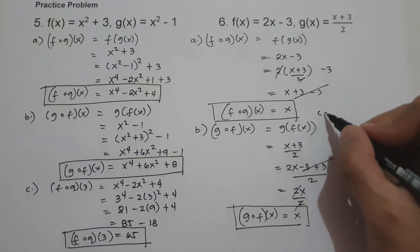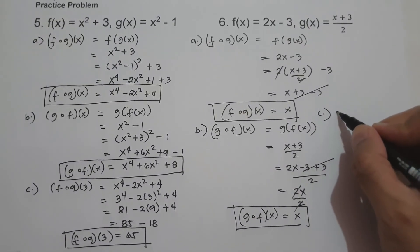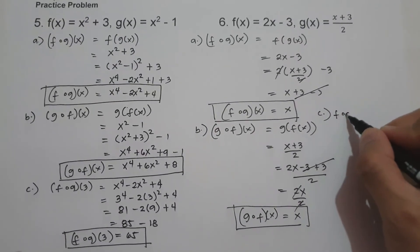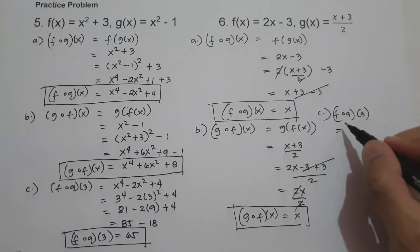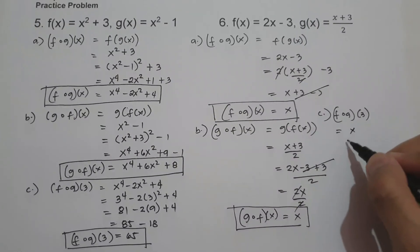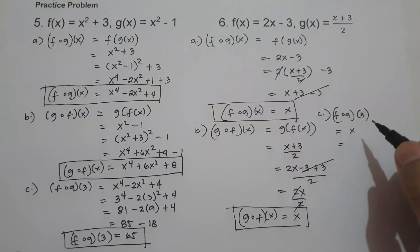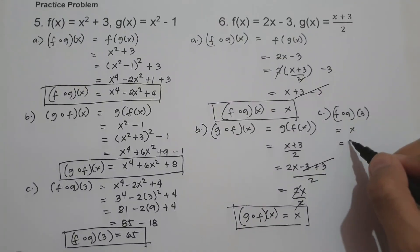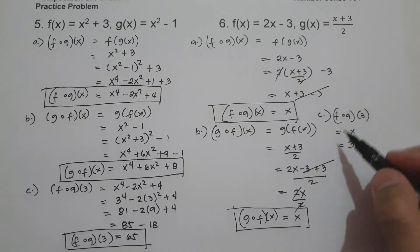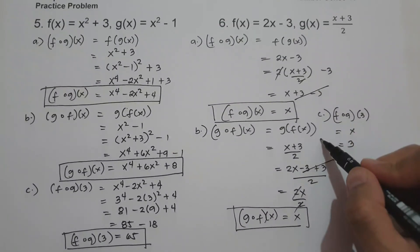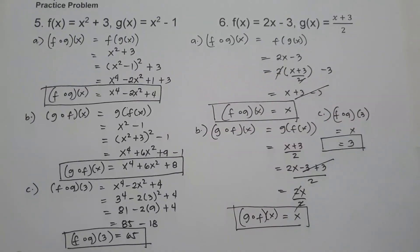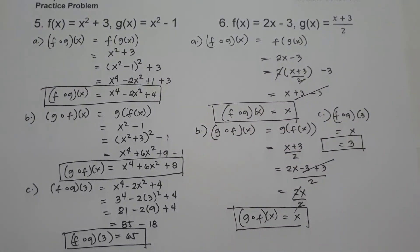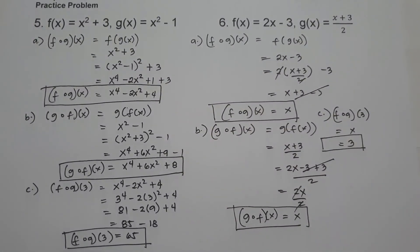On letter c, let us have f circle of g of 3. Since the value of f circle of g of x is x, all we have to do is substitute x equals 3, and that will be 3. So the value of f circle of g of 3 is 3, and that will be our answer. I hope you've learned from this lesson. Thank you so much for watching and God bless us all.